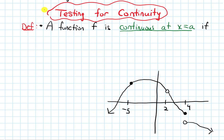In this video, we will talk about how we can test whether a function is continuous at a point. I want to begin by defining what it means for a function f to be continuous at x equals a, where a is some number. That's the case if the limit as x approaches a of f of x equals f of a.